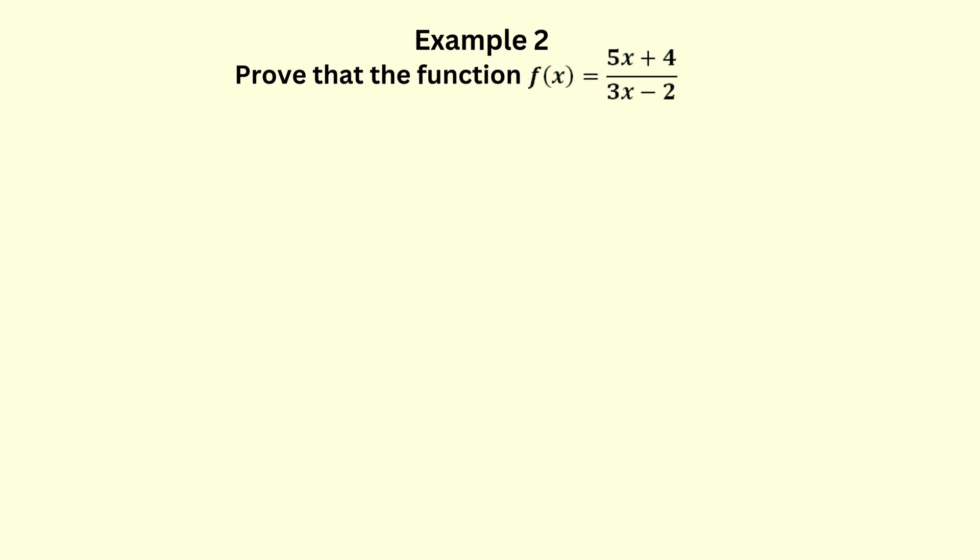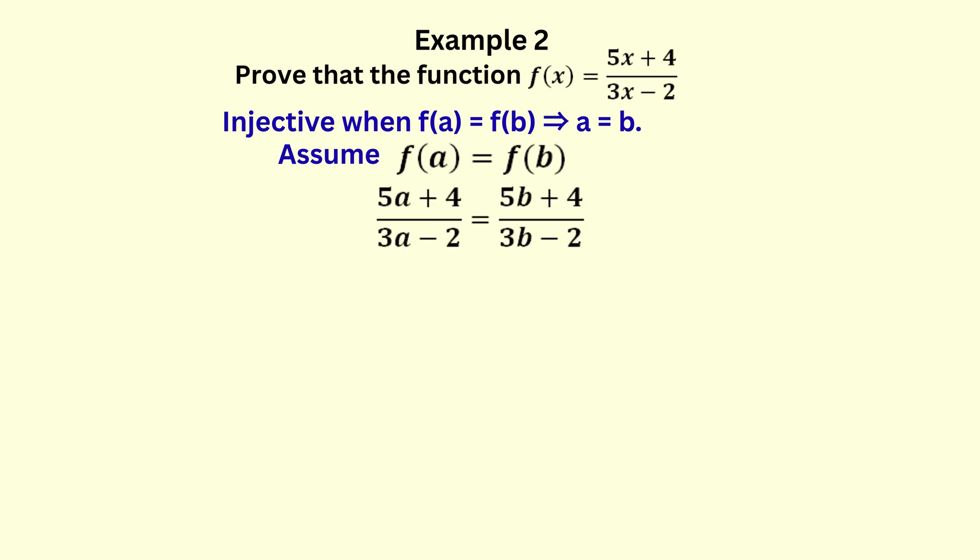Let's try another example. Show that the function 5x plus 4 over 3x minus 2 is injective. Recall that the function is injective when f of a equals f of b leads to a equals b. So, first we assume f of a equals f of b.